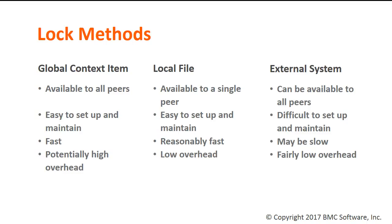There are three primary ways to store the status of a lock. The simplest is to use a global context item, which any workflow can read and edit like any other context item. This is quick and direct, but if you have a large number of locks in your workflow, they can cause high memory overhead.